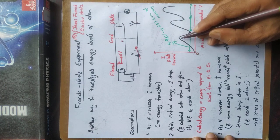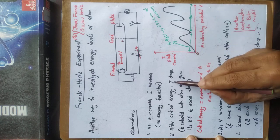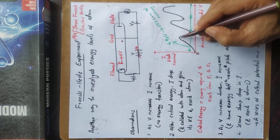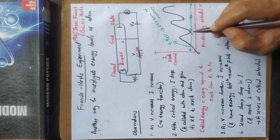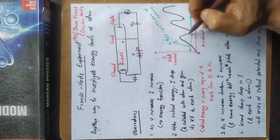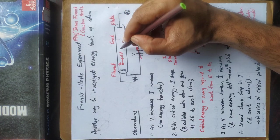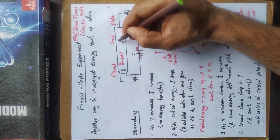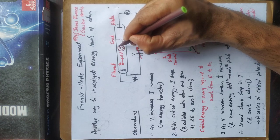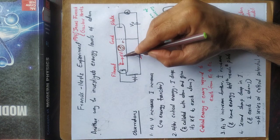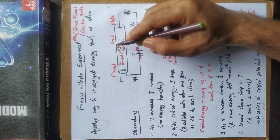The second observation is that at a certain point the plate current drops abruptly. The reason: electrons now have sufficient energy that upon collision, the kinetic energy of the electron is given to the atoms, exciting them from the ground state n=1 to a higher level. The energy levels are quantized.